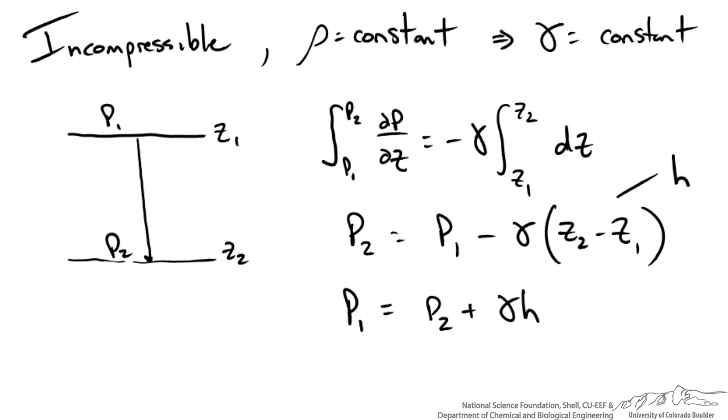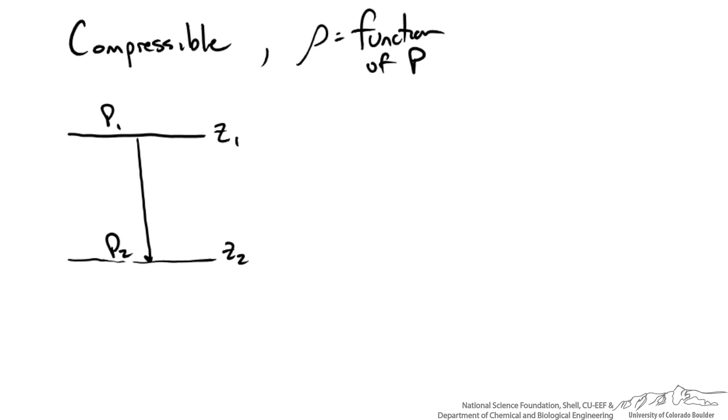So let's take a look at the case where it is not incompressible. So we have some compressible fluid. So that means our density is a function of pressure. That means our specific weight is not constant. So we need some relationship between density and pressure. Now for an ideal gas, we could use the ideal gas law. So let's just start there.